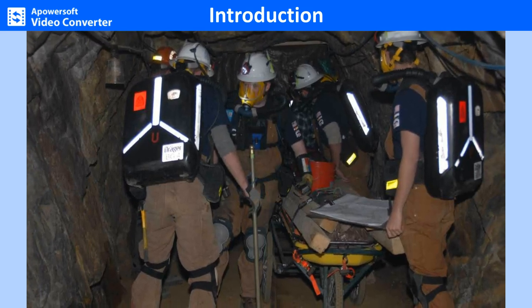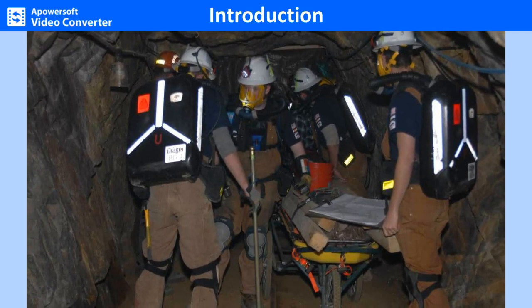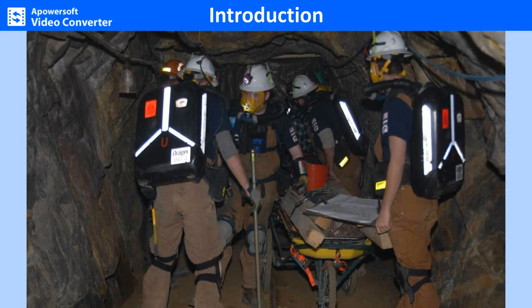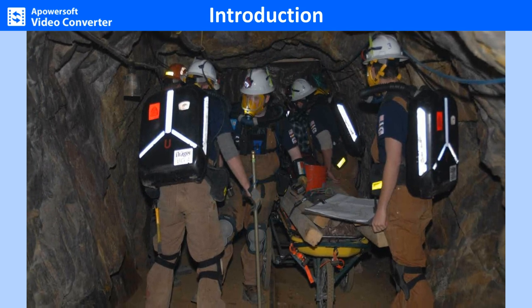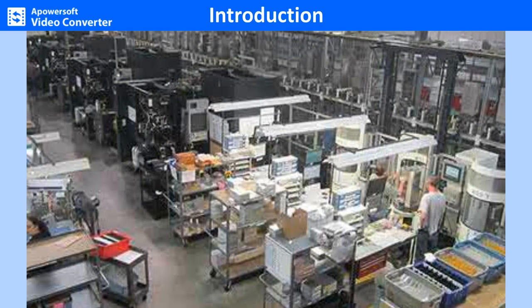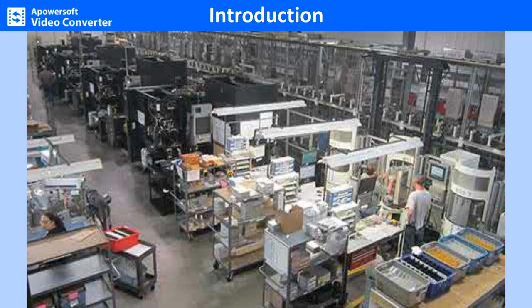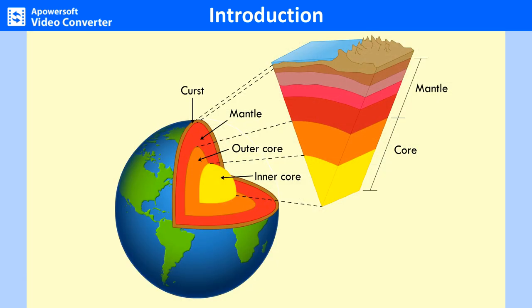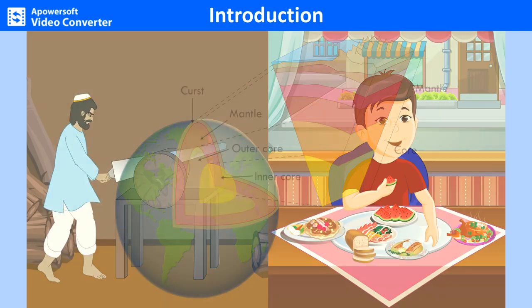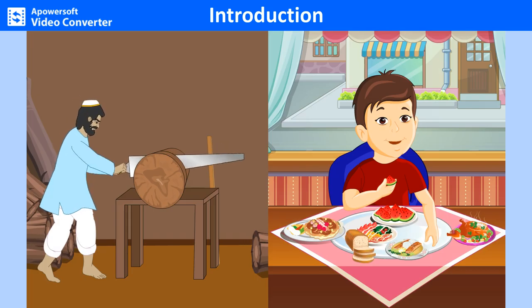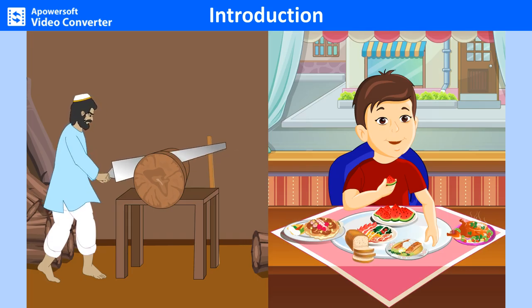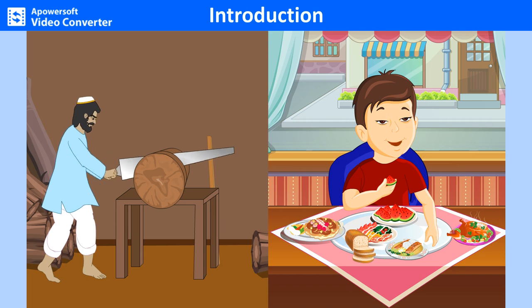Human civilization owes a lot to the knowledge and application of metals and minerals, for they provide the basis of machinery on which modern manufacturing depends. The earth's crust is made up of rocks and minerals. We use metals and minerals for various purposes in our daily life. In this chapter, we shall learn about these in more detail.